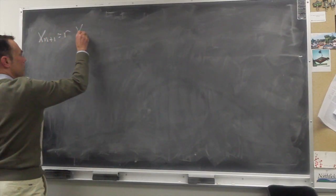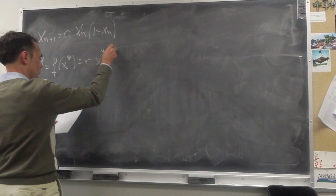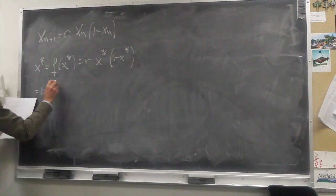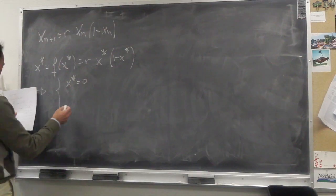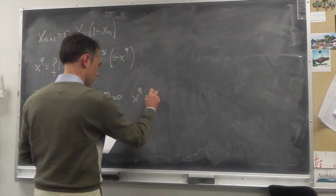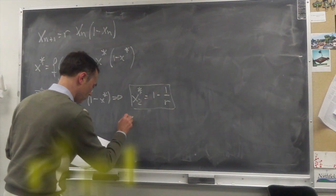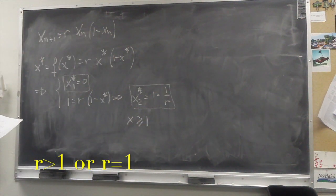Let's now find the fixed points in the logistic map. The fixed points satisfy this equation. So for x star equal to 0 or x star equals 1 minus 1 over r we have fixed points. The second one is only valid for r larger or equal to 1 though.